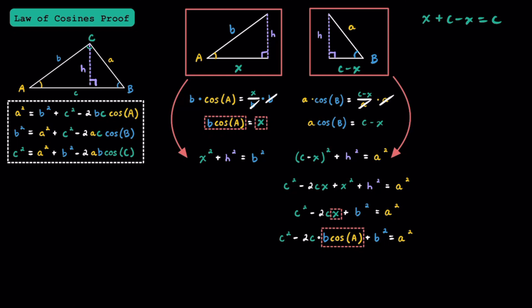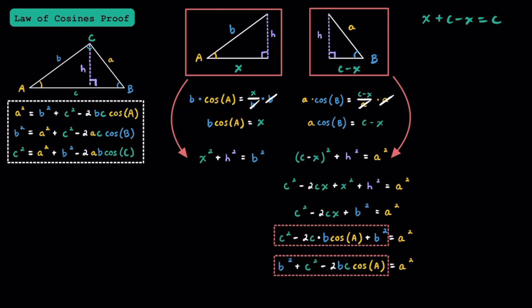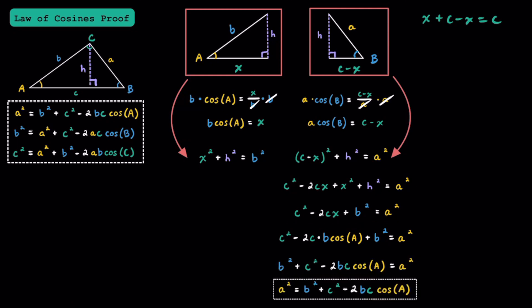Now that we've made this substitution, we're almost there. Rearranging the left side, we can write b squared plus c squared minus 2bc times cosine of angle A equals a squared. And finally, we have one of the three formulas for the law of cosines. If you want to derive the other two formulas, you just have to take a different base and altitude and split the triangle into two different right triangles.